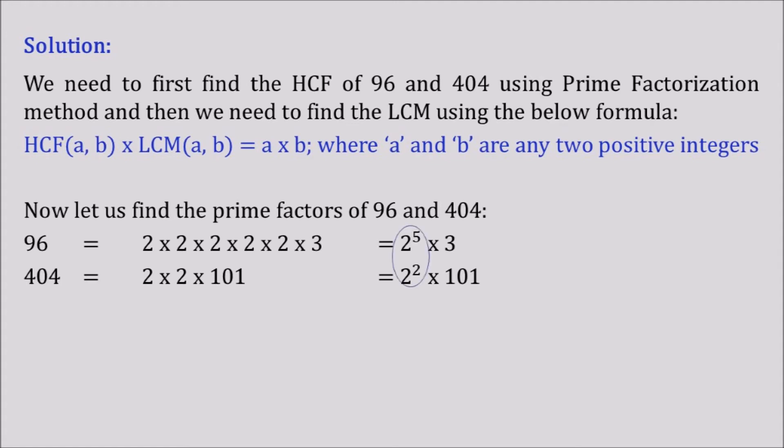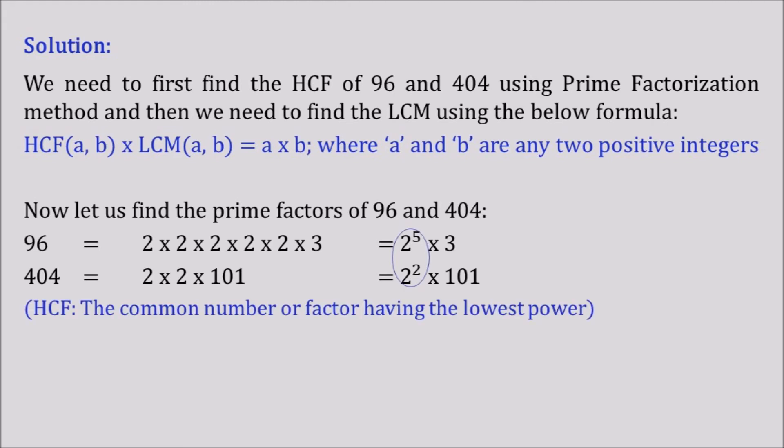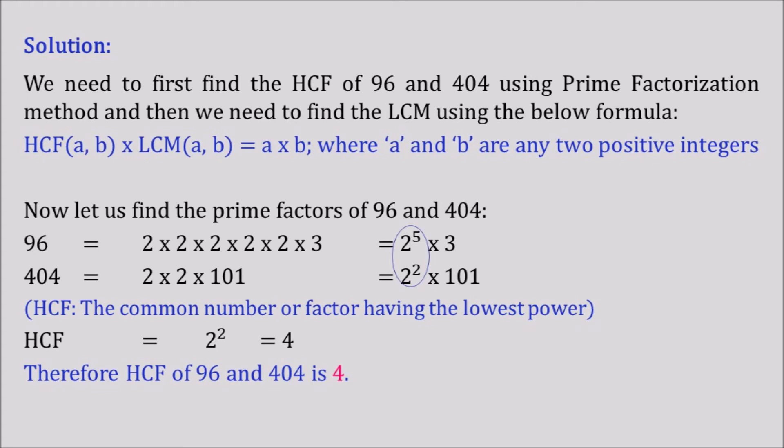Now in both cases we can see that 2 is the common factor. In the first case we have 2 to the power 5, and in the second case we have 2 to the power 2. Applying the HCF definition — the common factor with the lowest power — the lowest power is 2². Hence HCF is equal to 2² which is 4. Therefore the HCF of 96 and 404 is 4.